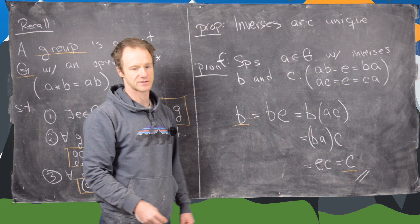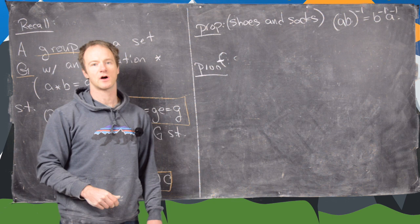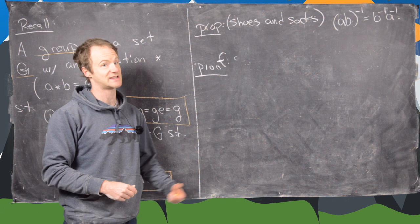So we've got a couple more of these general propositions to prove before the end of this video. So this next proposition we want to prove is sometimes called the shoes and socks theorem. So I'll let you decide why it's called the shoes and socks theorem. Just think about taking your shoes and socks off and on and what order you have to do that in.